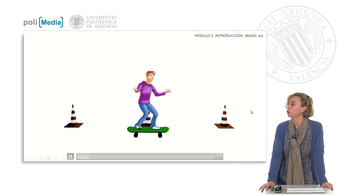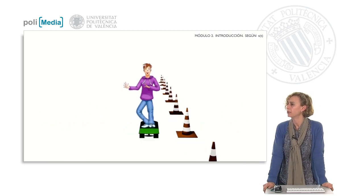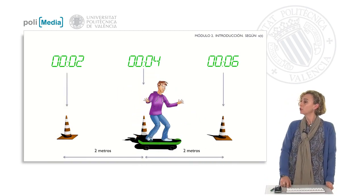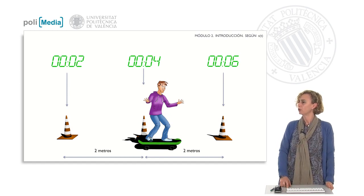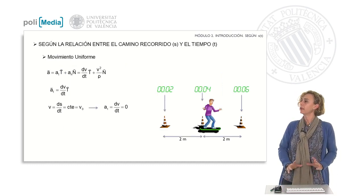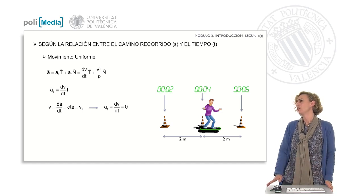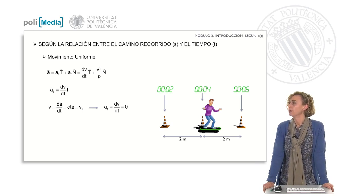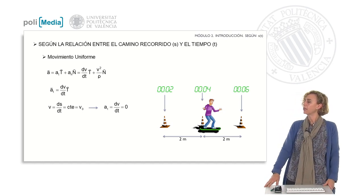Let's look now not only at the trajectory that Jay follows but also at the time it takes to pass from one cone to another. We see that it takes two seconds to travel two meters, so it has a velocity of one meter per second. Now we are going to analyze the motion based on the relation that exists between the distance traveled and time. To do this we will consider the tangential component of acceleration. Since Jay maintains a constant velocity, its variation with respect to time will be zero, so the tangential acceleration will also be zero.